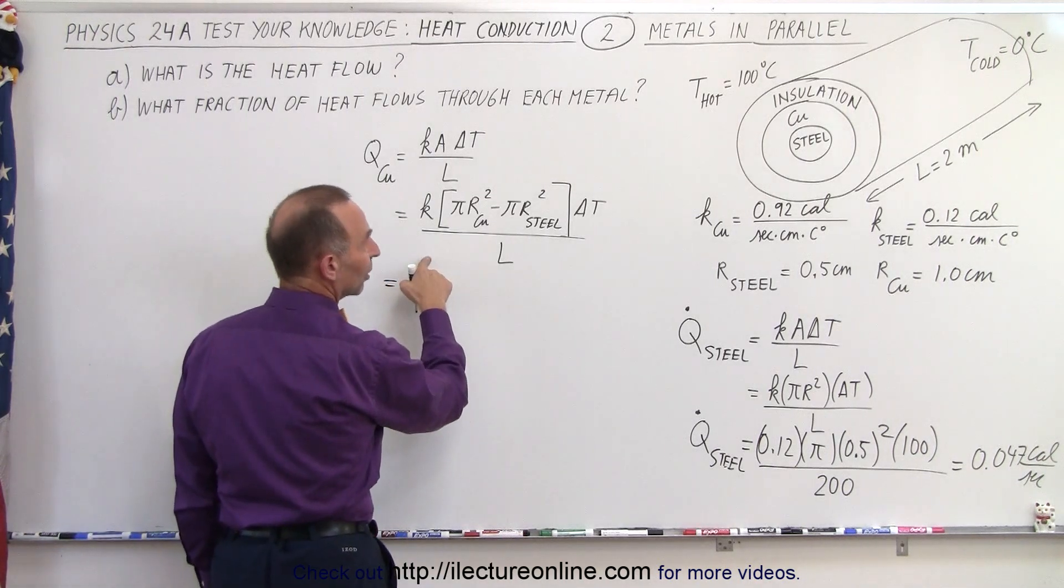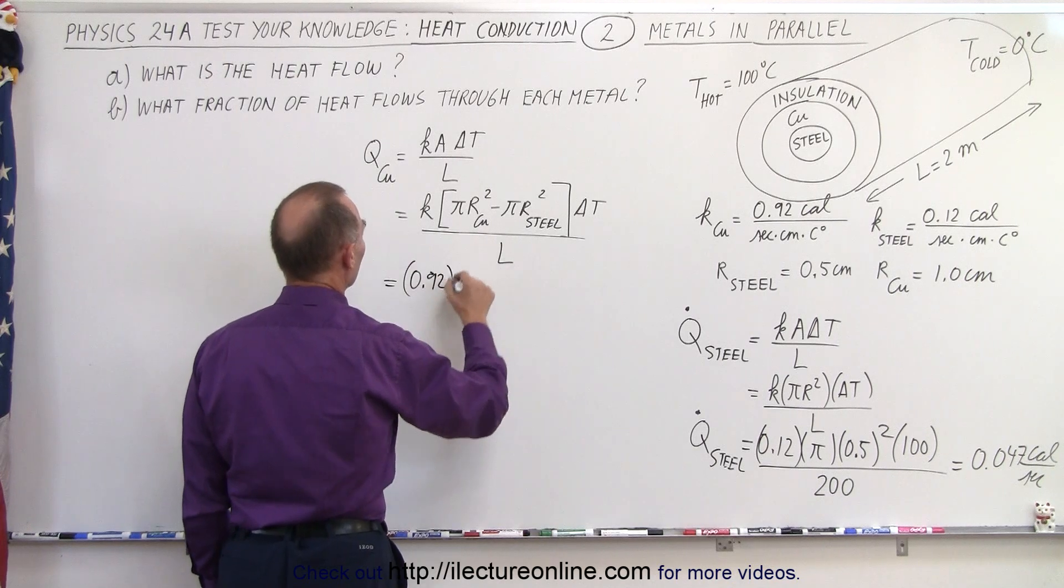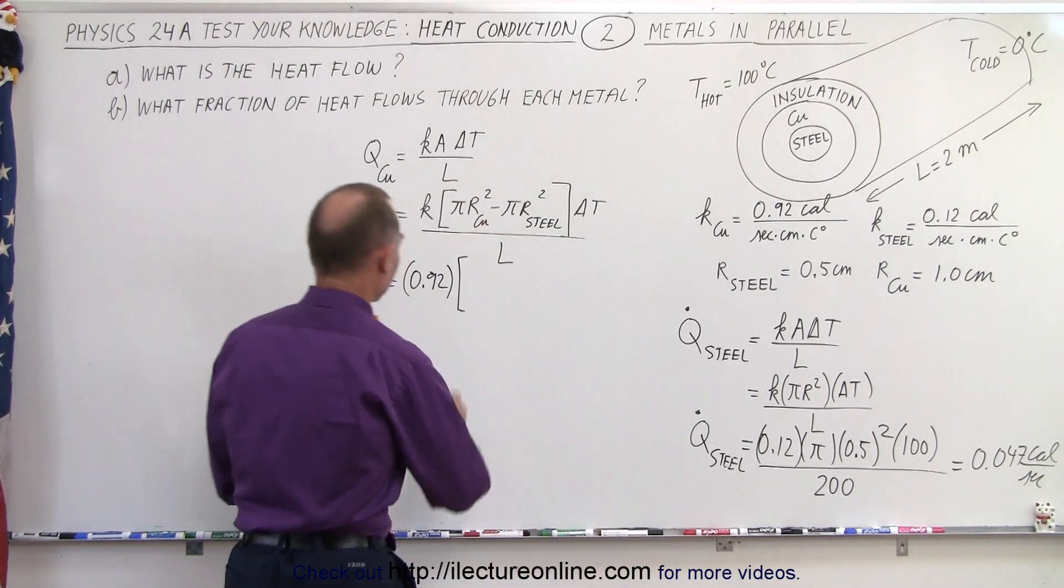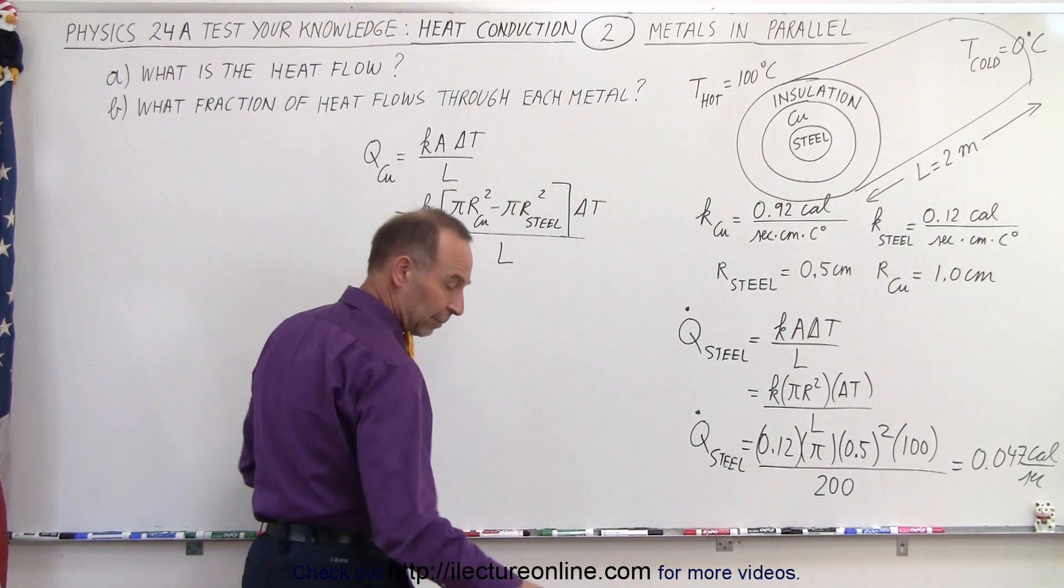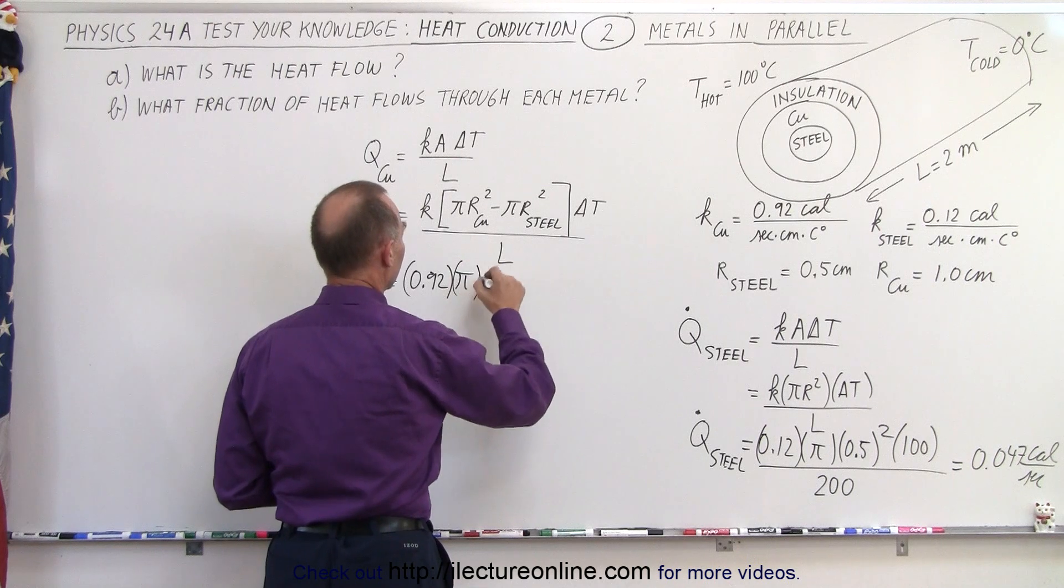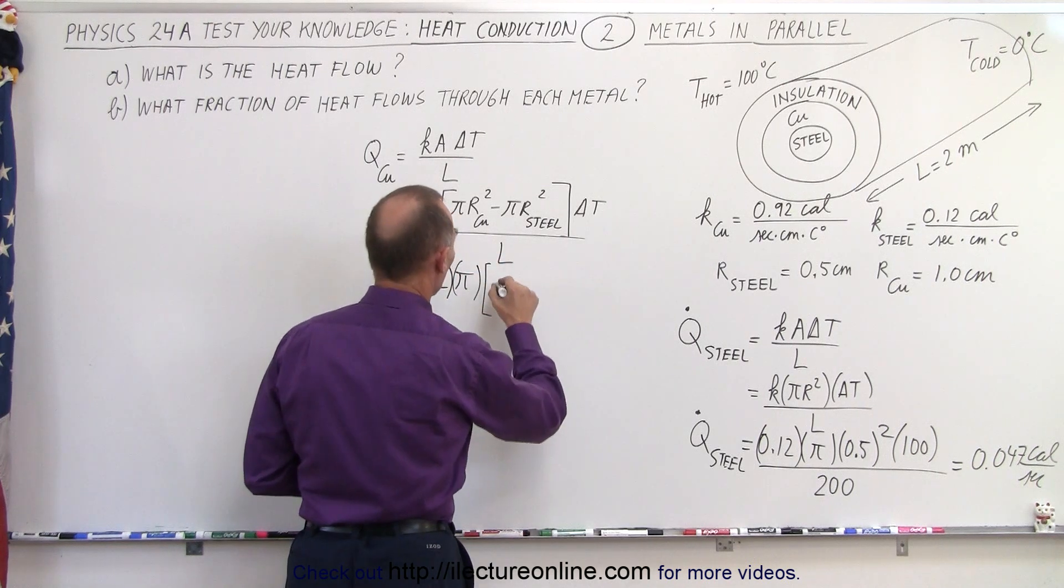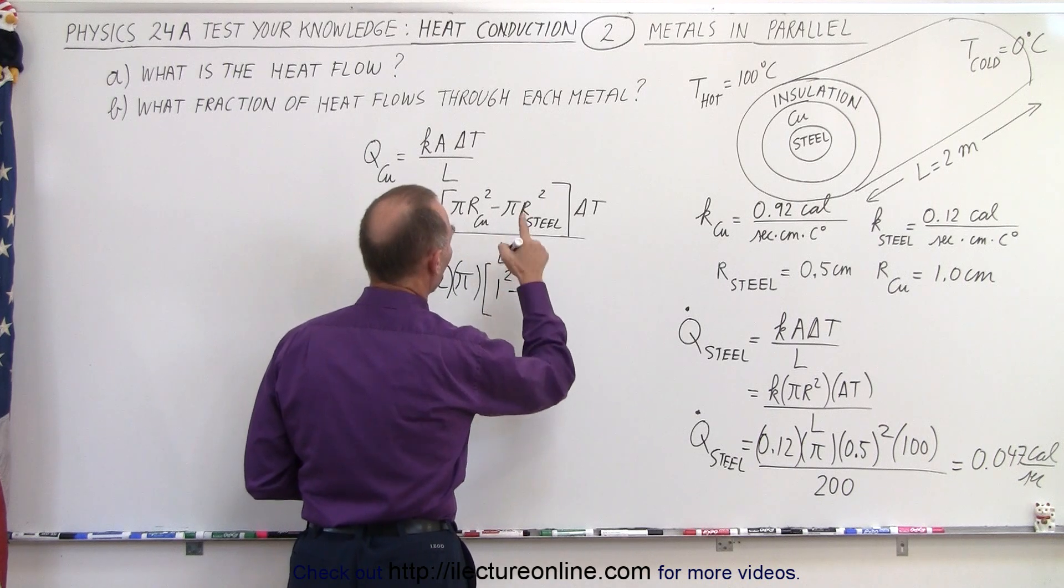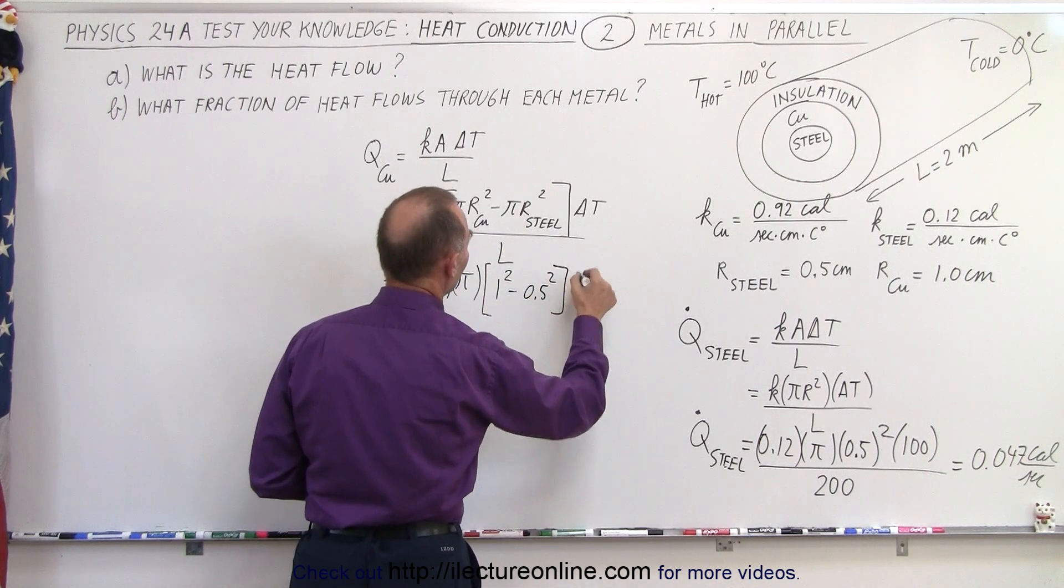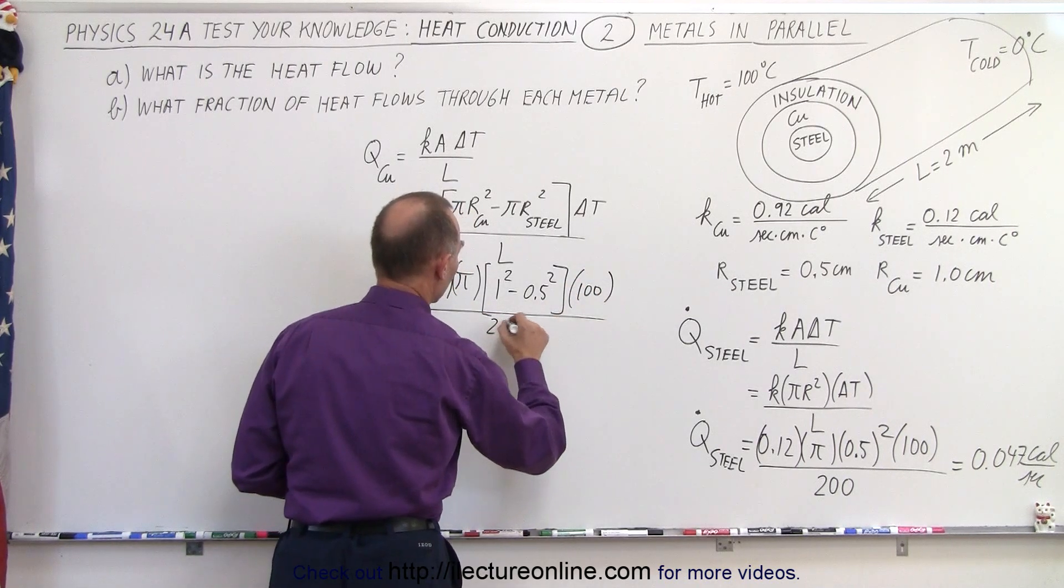So in this case, K for the copper, that's equal to 0.92 multiplied times, well actually I can factor out a pi. Let's do that. Let's factor out the pi times pi times r of the copper, that would be 1 squared minus r of the steel, 0.5 squared times delta t, that would be 100 again, all divided by the length in centimeters which is 200.